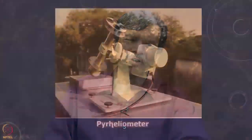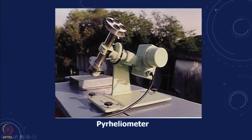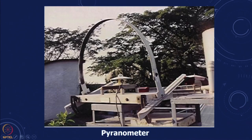We have direct and diffused insolation. If you are looking at the direct insolation, there is an instrument used to measure the direct beam insolation called the pyrheliometer. This is focused so that it directly depends on the position of the sun, taking the direct normal beam radiation.